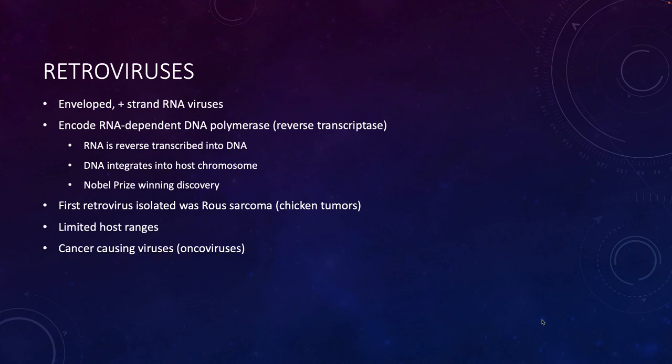Many retroviruses can cause cancer, so they can be classified as oncoviruses. The big hint is that the DNA integrates into the host chromosome. If it integrates in a place that inactivates a necessary gene like p53 or any of those tumor suppressor genes, or if it integrates in such a way that you now have overexpression of an oncogene, you can have cancer formation.